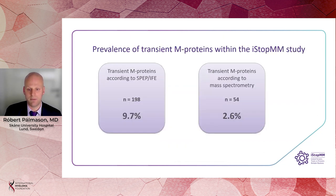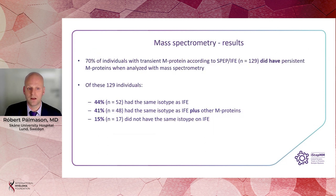When using SPEP or IFE for diagnosing M proteins, we observed a prevalence of 9.7% of transient proteins within the iSTOP-MM study cohort, but when analyzing these individuals with mass spectrometry and using that as the benchmark, the prevalence was 2.6%. Of the 70% of individuals who had a persistent M protein at both baseline and follow-up according to mass spectrometry — and were therefore not truly transient — we found the same isotype in 44% of cases, the same isotype plus other M proteins in 41%, but in 15% of cases we did not have the same isotype on mass spectrometry as on immunofixation.